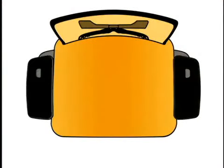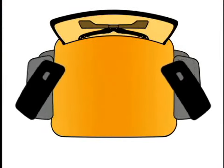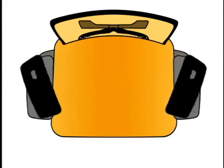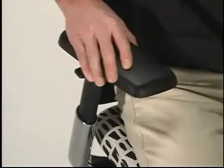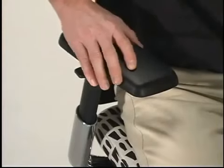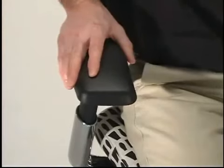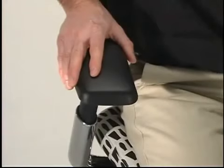Armrest Pivot allows the user to have proper support for the forearm when mousing or keying. To change the angle of the armrest, grasp the armrest cap and rotate the front of the armrest toward your body or away from your body.